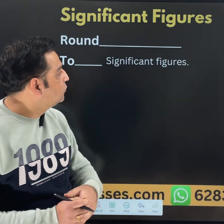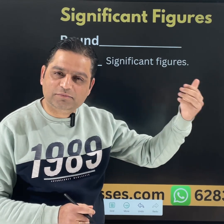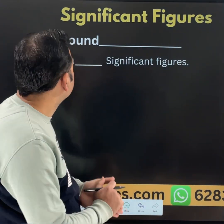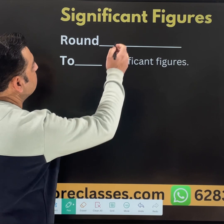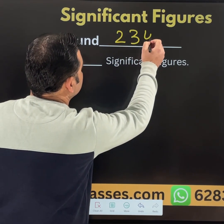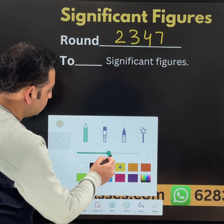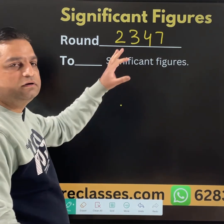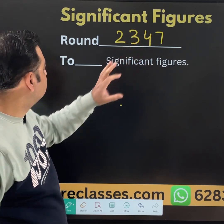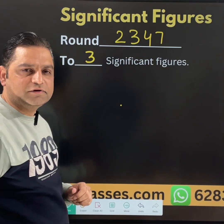I am going to start with the basic rules along with examples I will be explaining during the video, so please attend till the end. For example, let us start with the very basic example. Let us suppose 2347 is a number. You need to round this number to 3 significant figures.